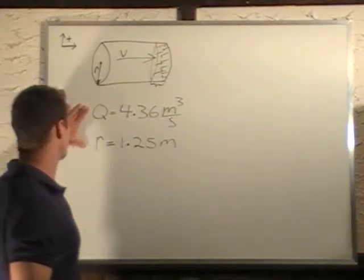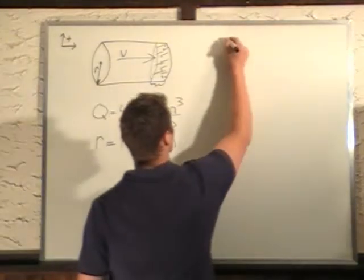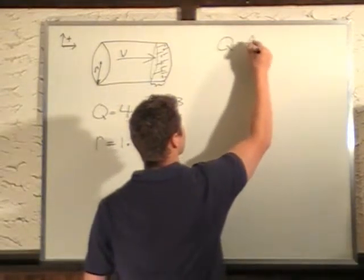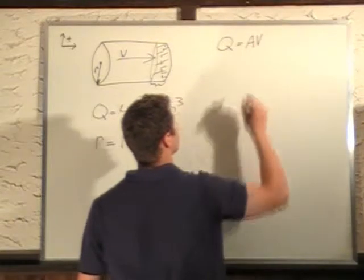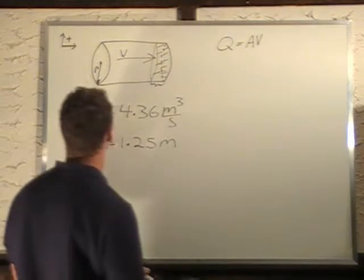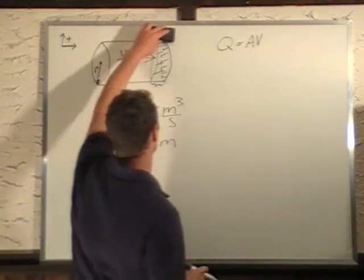To figure out exactly what our velocity is, flow rate Q is equal to area times velocity. Okay? Now that's the cross section of the area that we have to find.